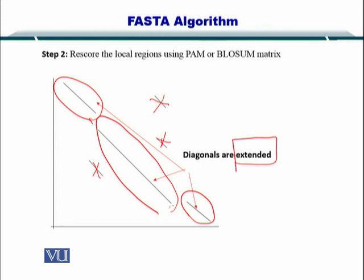As you can see, this portion is disconnected and this portion is disconnected. So you want to extend these diagonals such that they are joined.